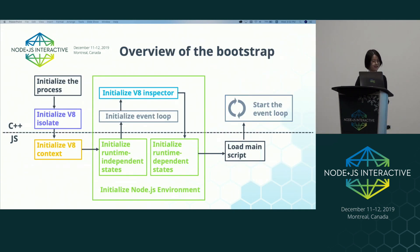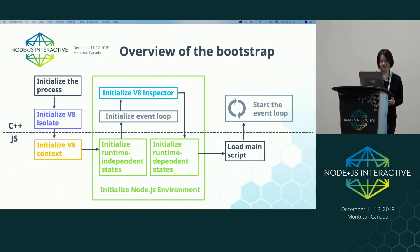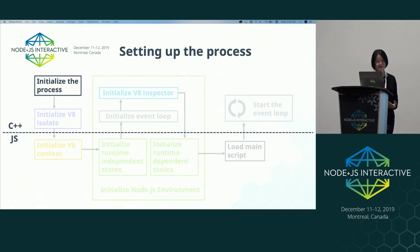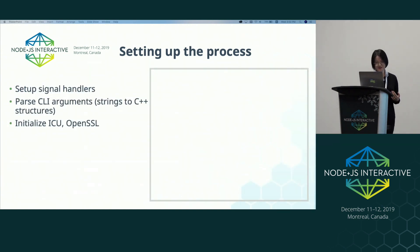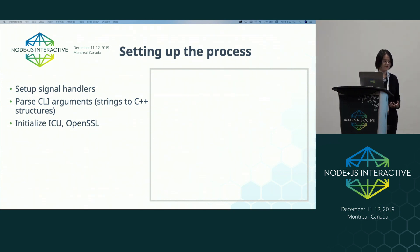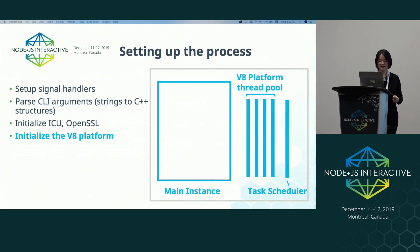Here is an overview of the Node bootstrap process. We'll talk about these steps one by one. First, we need to do a few setups that should only be done once per process. This includes setting up the signal handlers, parsing the command line arguments from strings to C++ structures, and initializing the dependencies such as ICU for internationalization support and OpenSSL for crypto. Then we need to initialize the V8 platform, which includes a task scheduler and thread pool that we can use to compile JavaScript or run garbage collection.